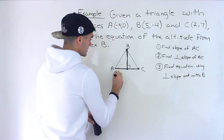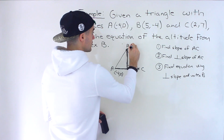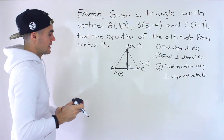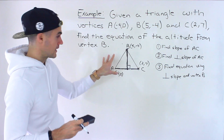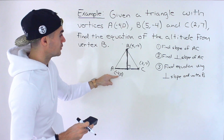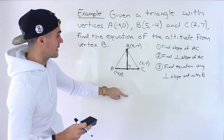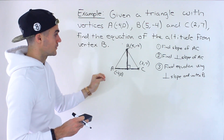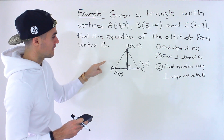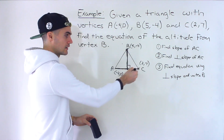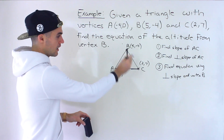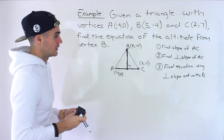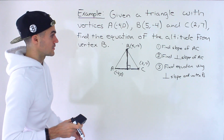Let's label the points: A is (-4, 0), B is (5, -4), and C is (2, 7). Note this drawing is not to scale on a Cartesian plane — B at (5, -4) would actually be below the other points. I recommend making a rough drawing like this even if it's not to scale, as it helps you see what's happening. If you're required to graph, make sure to plot the proper points on the Cartesian plane.